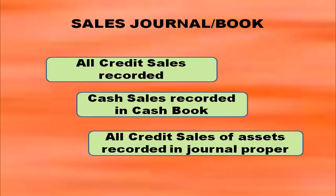Sales journal or sales book: in the sales book, all credit sales are recorded. Cash sales are recorded in the cash book. All credit sale of goods are only recorded in the sales book, while all credit sale of assets are recorded in the journal proper. So only credit sale of goods are recorded in the sales book, cash sales in the cash book, and credit sale of assets in the journal proper.